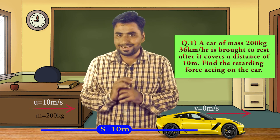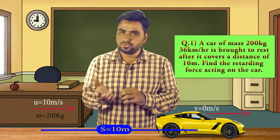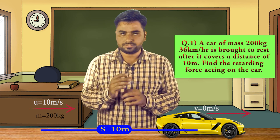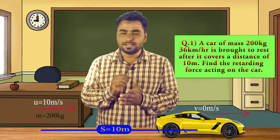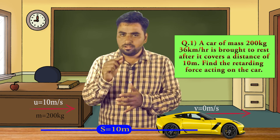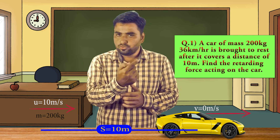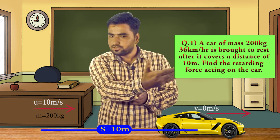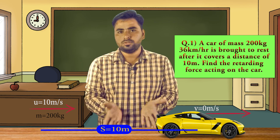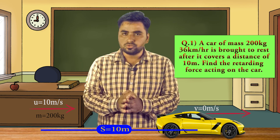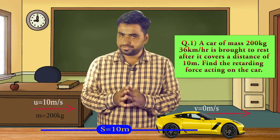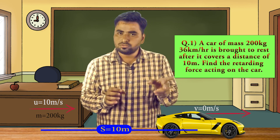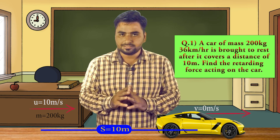The formula for force is F = ma. Now acceleration 'a' can be written as (v − u)/t, or alternatively as (v² − u²) / 2s. This second form comes from the kinematic equation v² − u² = 2as — rearranging gives a = (v² − u²) / 2s. So in F = ma, we can substitute 'a' with this expression.